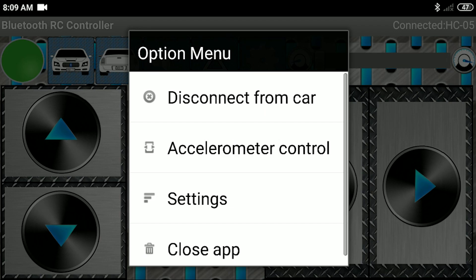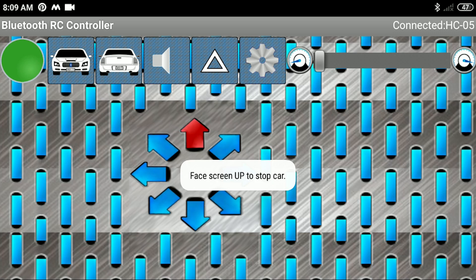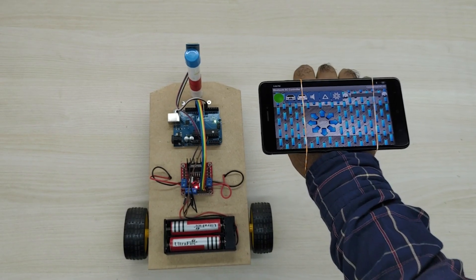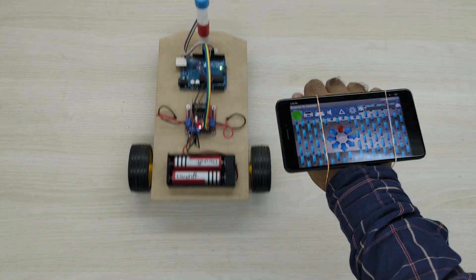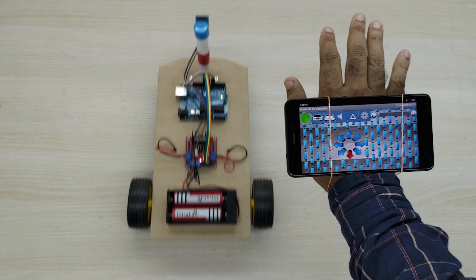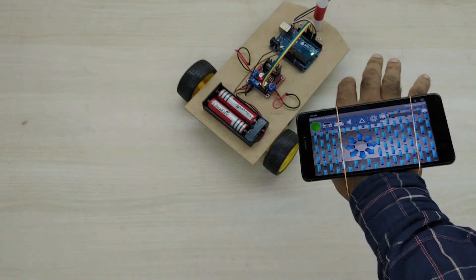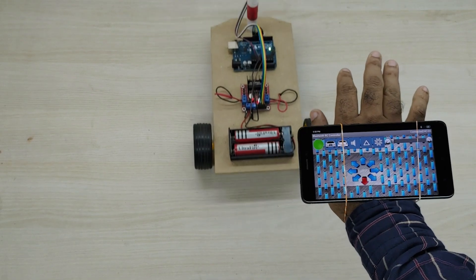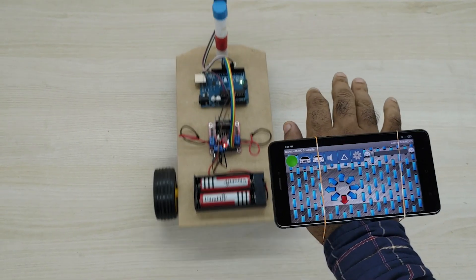After pairing with Bluetooth module, click on accelerometer control. That is it. You are ready to go. The robot will be now controlled with the gyroscope inside the smartphone. You can tie the smartphone to your hand with a rubber band and now with your hand gestures the robot starts moving. The feeling is just super cool. Please try this simple project and you will be really loving it.